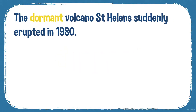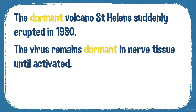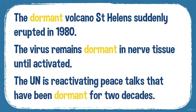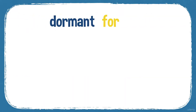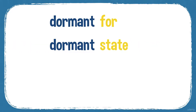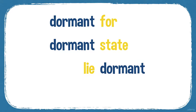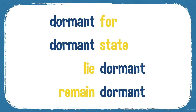Here are some example sentences. The dormant volcano St. Helens suddenly erupted in 1980. The virus remains dormant in nerve tissue until activated. The UN is reactivating peace talks that have been dormant for two decades. You can be dormant for a period of time — dormant for ten years, dormant for two hours. You can be in a dormant state, lie dormant, or remain dormant.